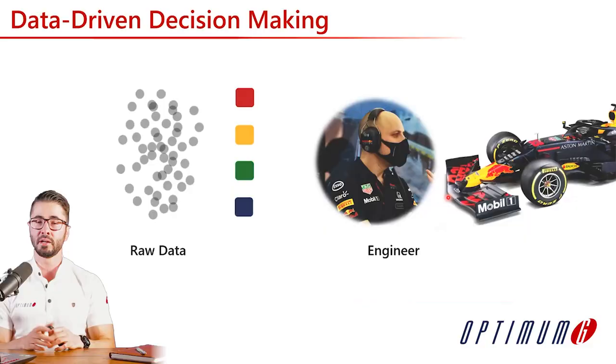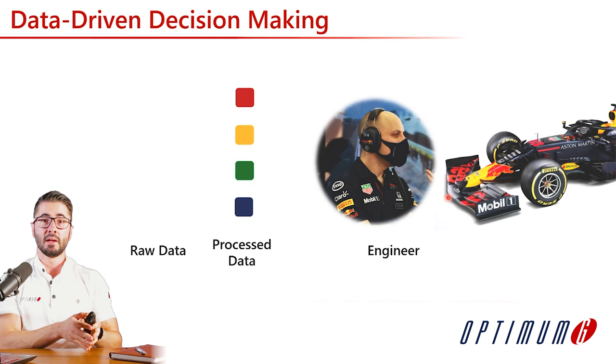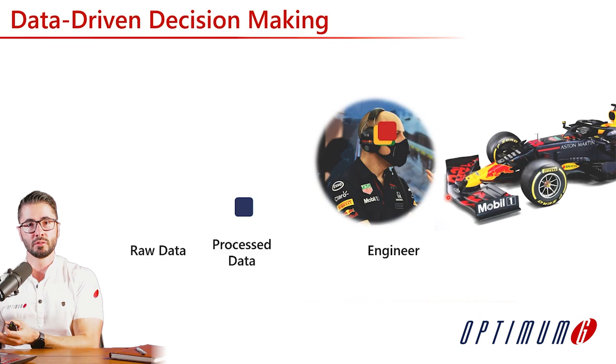What would be a real data-driven decision-making process? We collect raw data from all sources, organize it, process it, then visualize it. Critically, we then select what information we are going to use and what we are not. The data never needs to be perfect, but it's important to understand when data is not accurate enough to make decisions from.